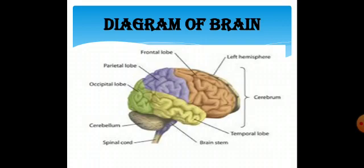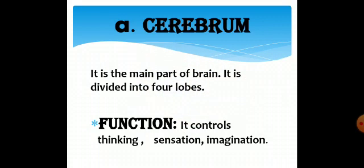Now cerebrum: it is the main part of brain, and I have told you in the diagram it is divided into four lobes: frontal lobe, parietal lobe, occipital lobe, and temporal lobe. And the function of cerebrum is to control thinking, sensation, and imagination.